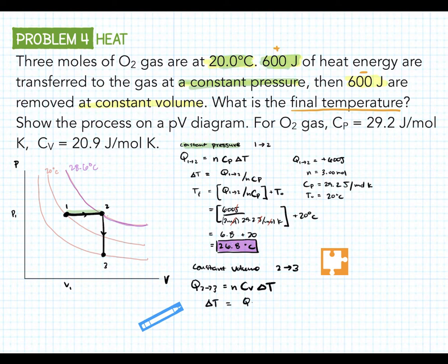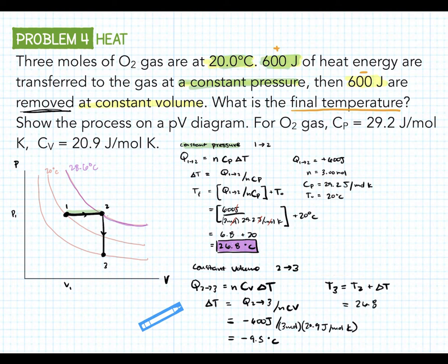Delta T is Q 2 to 3 over nCv, which ends up being negative 600 joules, because remember we're removing the heat, divided by 3 moles and 20.9 joules per mole Kelvin. That's going to give us negative 9.5 degrees Celsius, knowing that T3 equals T2 plus delta T in this case, that's going to be 26.8 degrees Celsius minus 9.5 degrees Celsius. So that's 17.3 degrees Celsius, which is good because we can see we're going to end up on a lower isotherm.